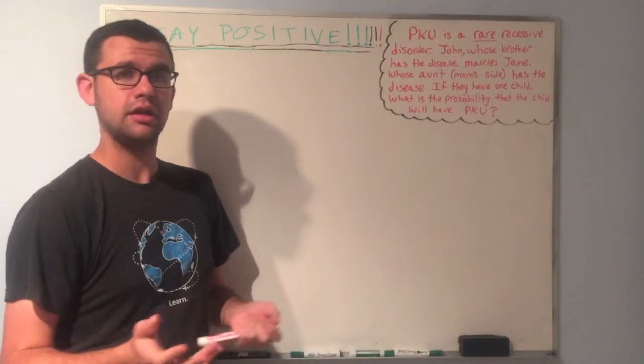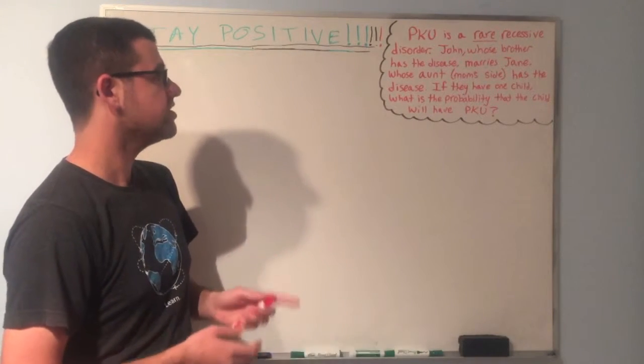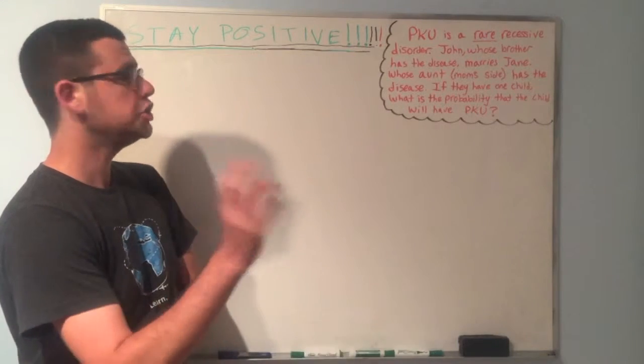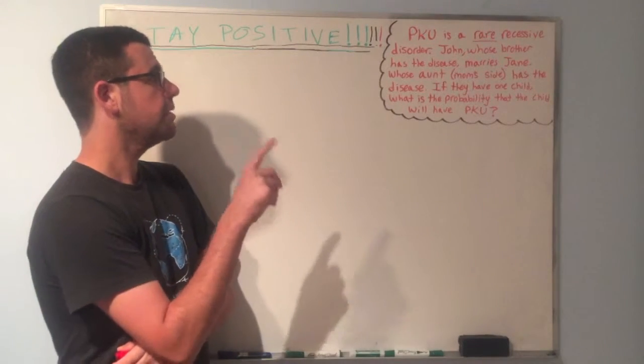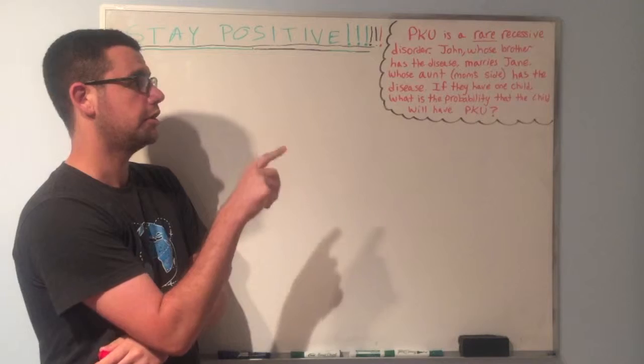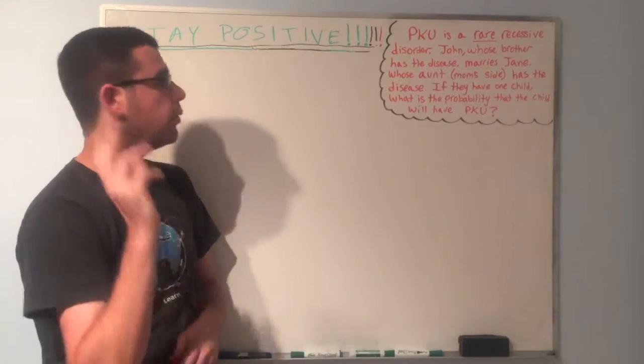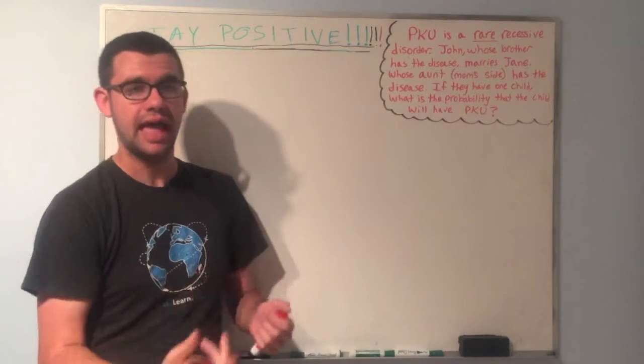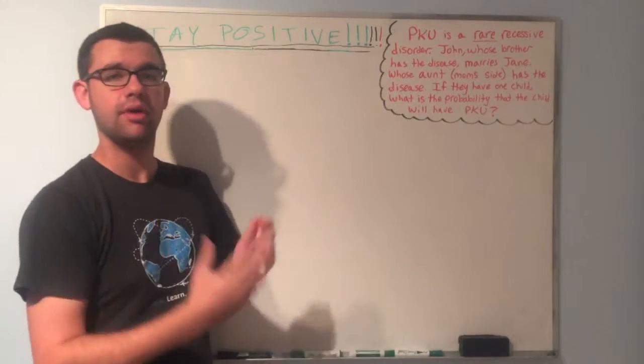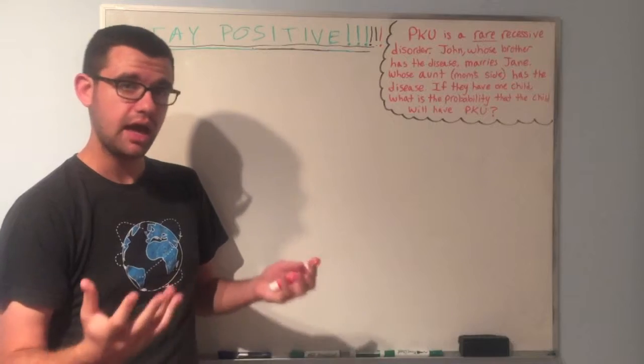The problem says PKU, or phenylketonuria, is a rare recessive disorder. And then it says that John, whose brother has the disease, marries Jane, whose aunt on her mom's side has the disease. If they have one child, the question is asking, what is the probability that the child will have PKU? In other words, what's the probability that the child will be affected?